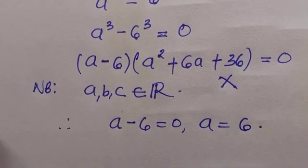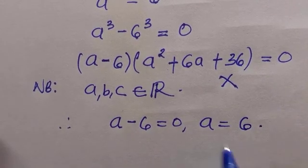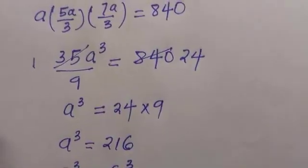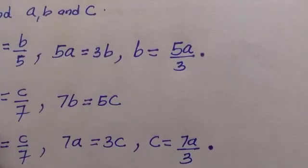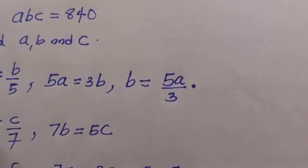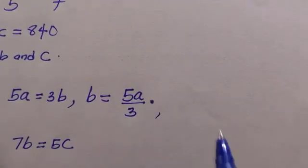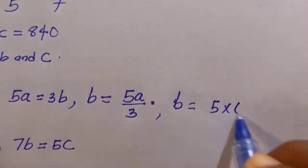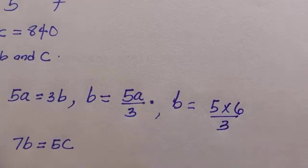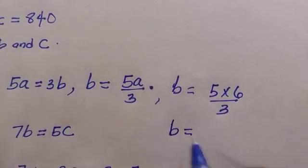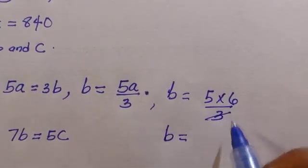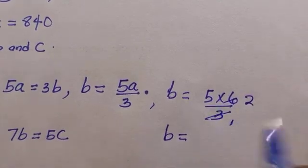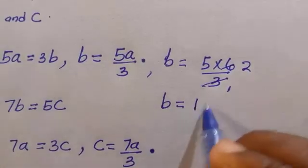If we have gotten the value of a which is 6, the next thing is we substitute a into the first equation here which is b equals 5a divided by 3. So by substituting we have b equals 5 times 6 divided by 3, which simplifies to 5 times 2, that is 10.